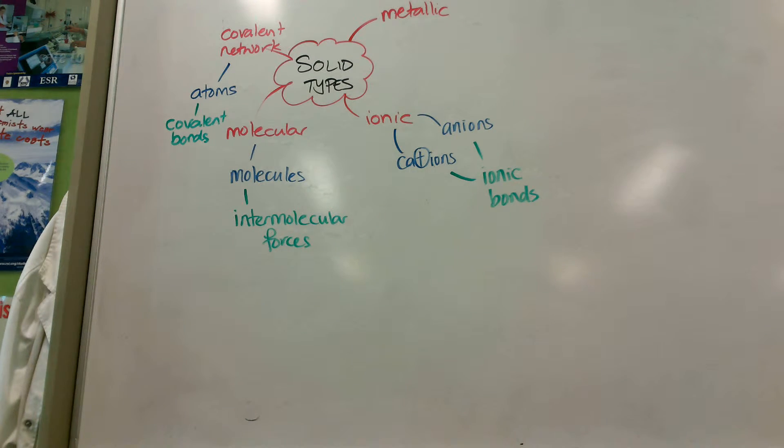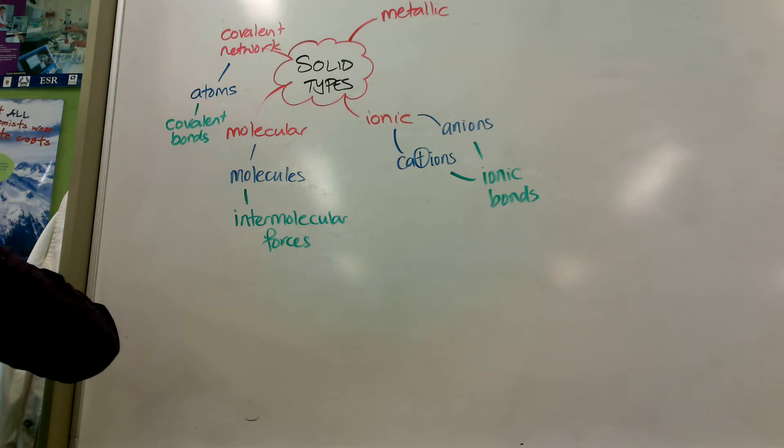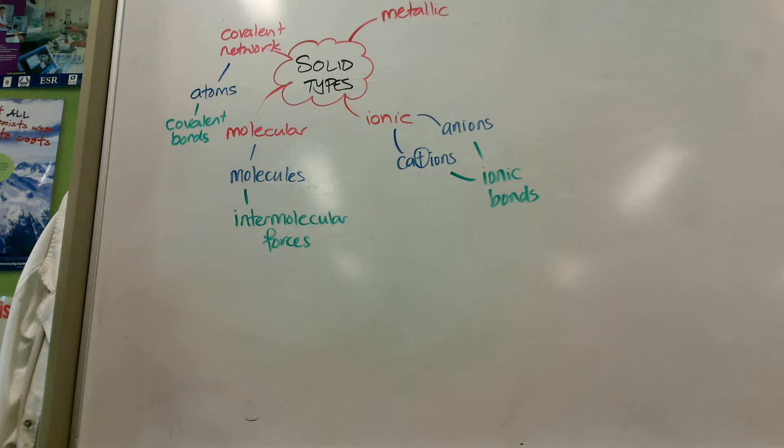However, because there's multiple covalent bonds for each atom in these, so things like graphite, diamond, silica, which is glass, that's why they're hard and often very brittle. Of course, graphite's not brittle because it's in layers which can slide over each other.